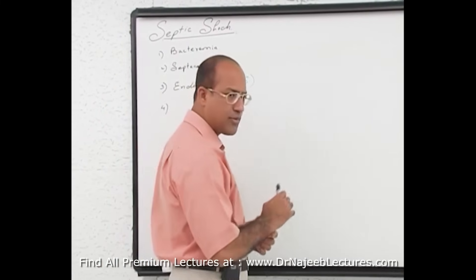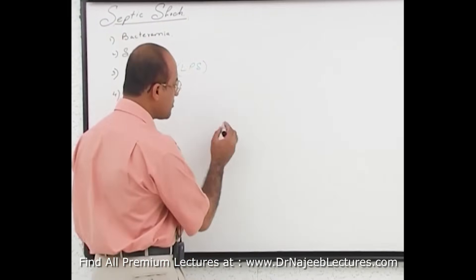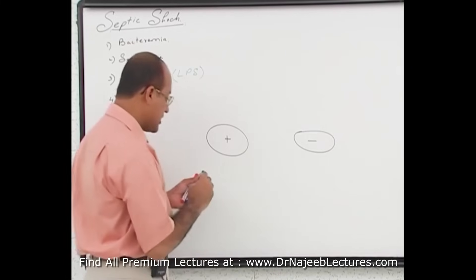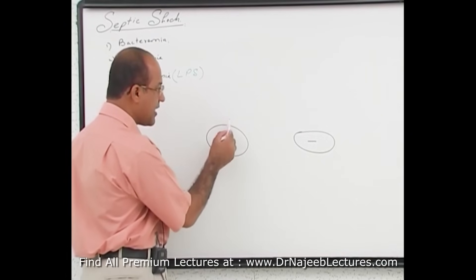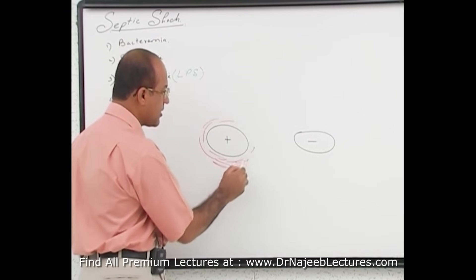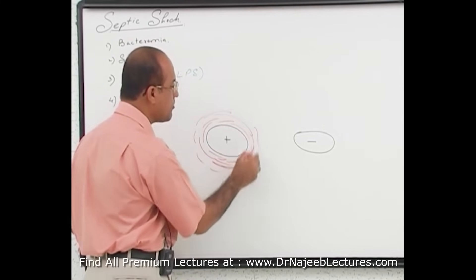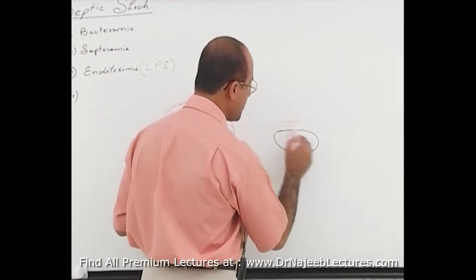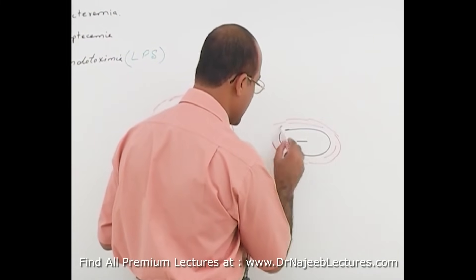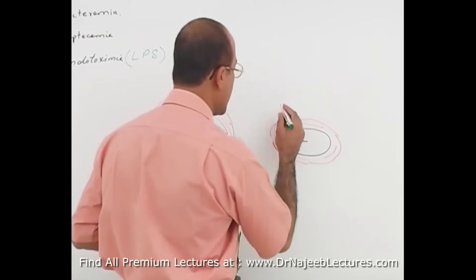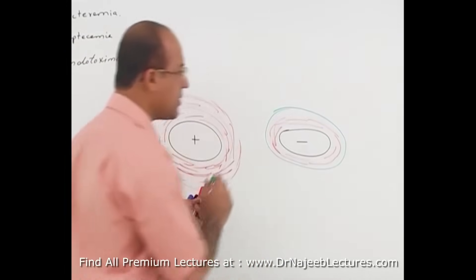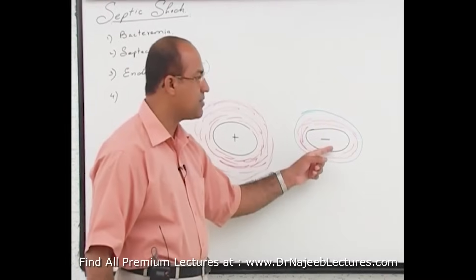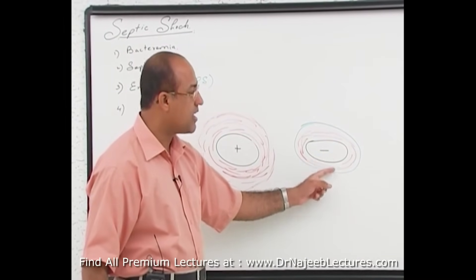Gram-positive bacteria have an inner membrane and a very thick layer of peptidoglycan on the outside. Gram-negative bacteria also have an inner membrane but have a very thin layer of peptidoglycan and an additional outer lipid bilayer. So gram-positive bacteria have only the inner lipid layer with thick peptidoglycan outside, while gram-negative bacteria have an inner lipid layer, then thin peptidoglycan, then an outer lipid membrane.